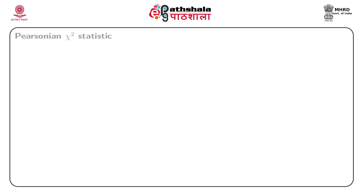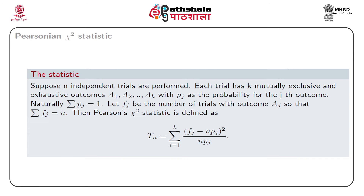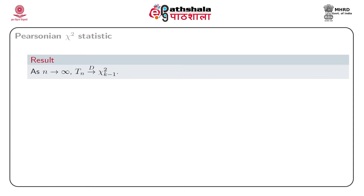Our next topic is Pearsonian chi-square statistic. Suppose n independent trials are performed, each trial has k mutually exclusive and exhaustive outcomes a_1, a_2, ..., a_k with p_j as the probability for the j-th outcome. Since we consider mutually exclusive and exhaustive outcomes, the sum of all p_j equals unity. Let f_j be the number of trials with outcome a_j, so that summation of f_j equals n. Then Pearson's chi-square statistic is defined as t_n = summation from j=1 to k of (f_j - n*p_j) squared divided by n*p_j, and as n tends to infinity, t_n converges in distribution to chi-square with k minus 1 degrees of freedom.